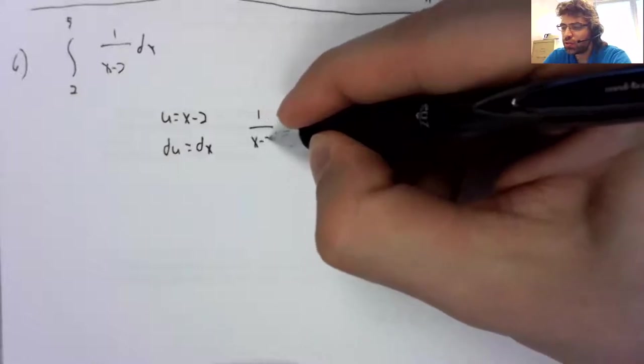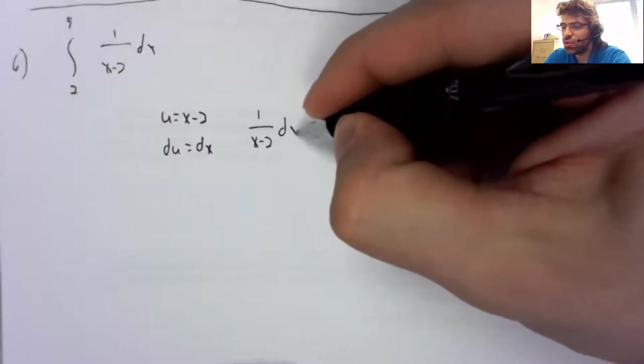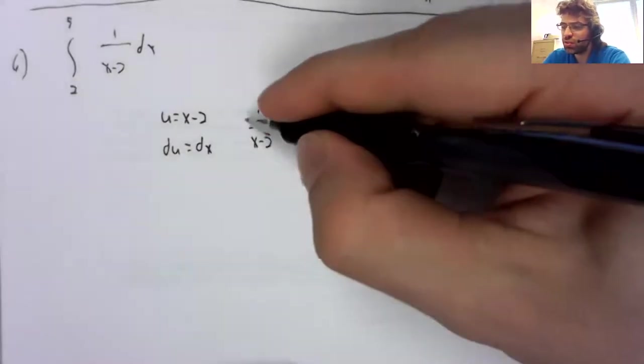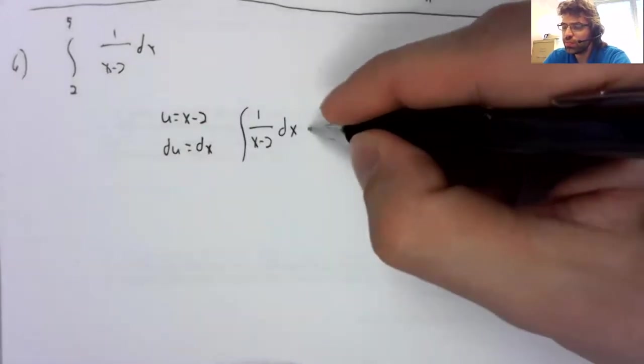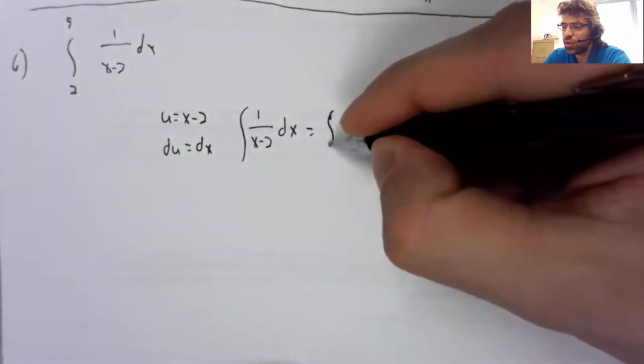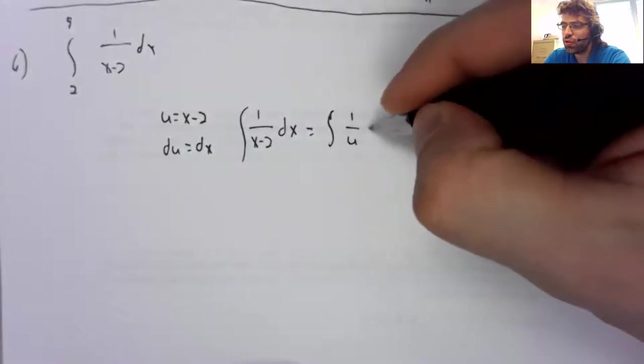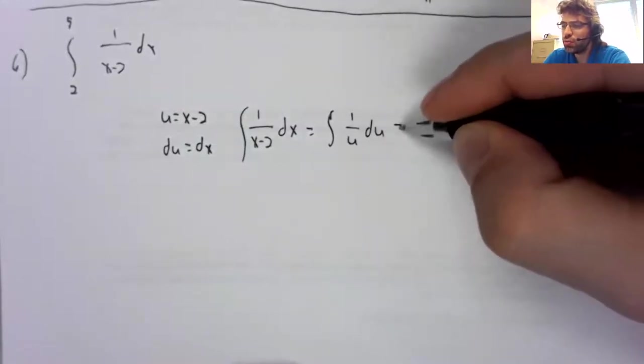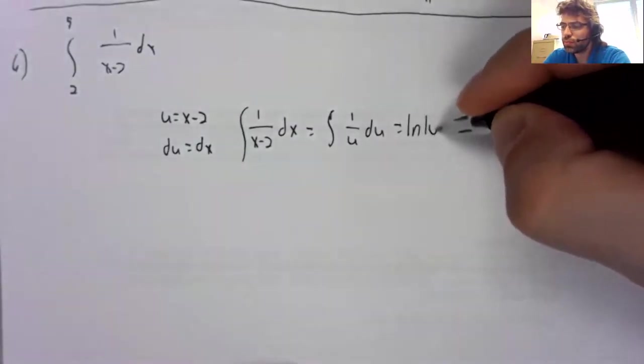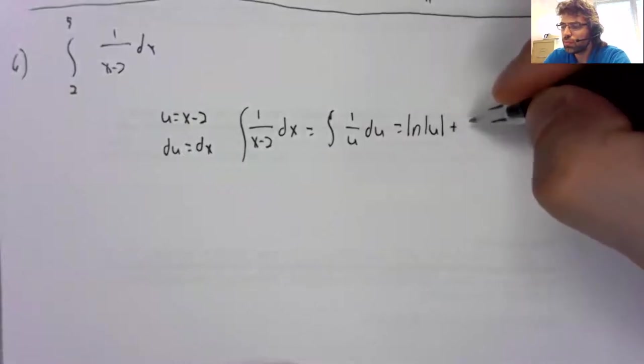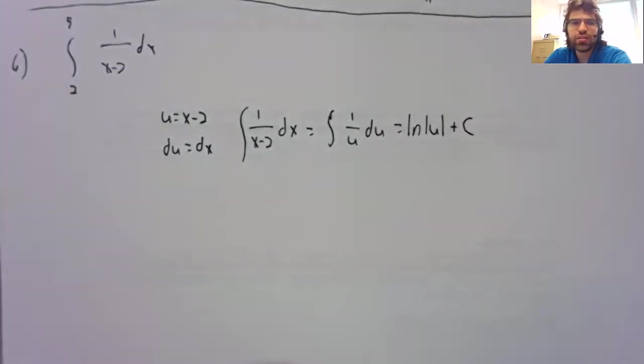One over x minus two dx is one over u du. And that's this.